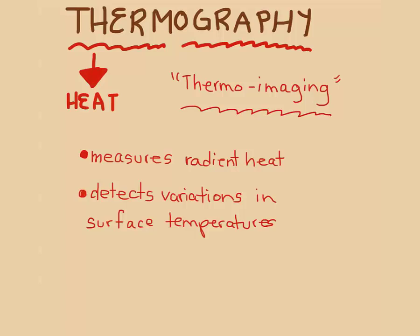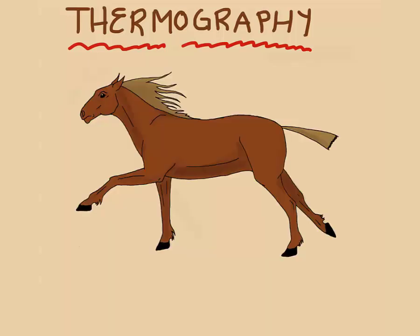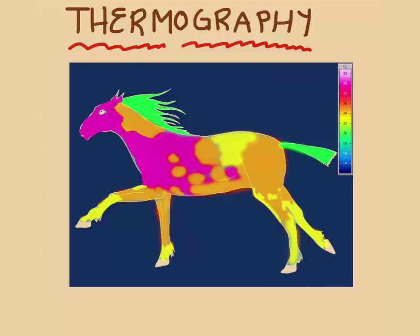So say for example we have a horse. When we use equipment that gives us an infrared image of the horse, this is what we see. There are areas that are warmer and cooler as indicated by the color scale on the side. The mane and tail are green which are cool, and this makes sense since they don't produce heat because they are composed of hair.